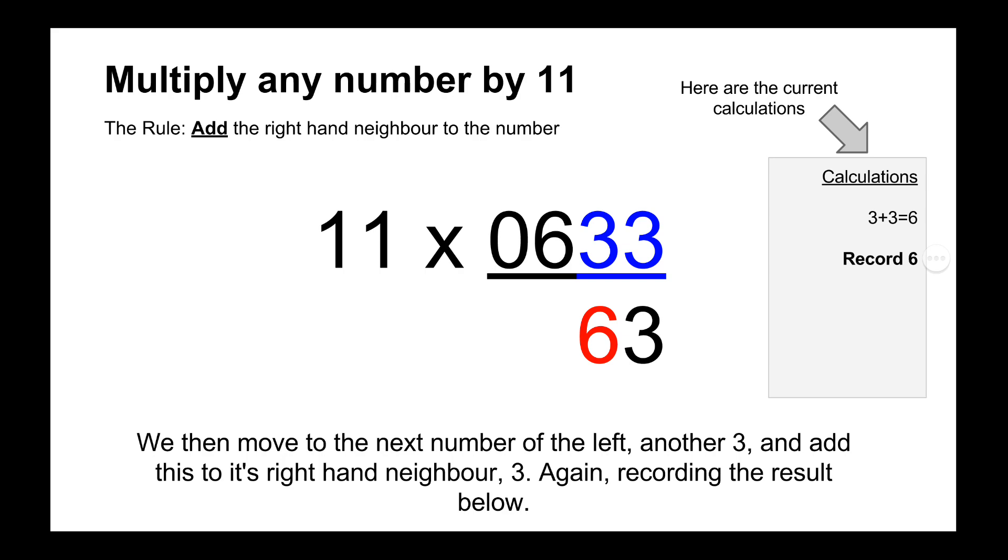So we move on to the next number which is another 3, and its neighbor is the 3 that we started with, so 3 plus 3 equals 6, so we simply record the 6 below shown in red.